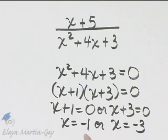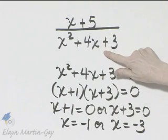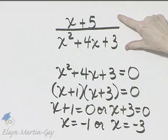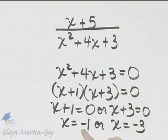So there are two values that make the denominator here zero, which in turn would make this rational expression undefined. Those values are negative one and also negative three.